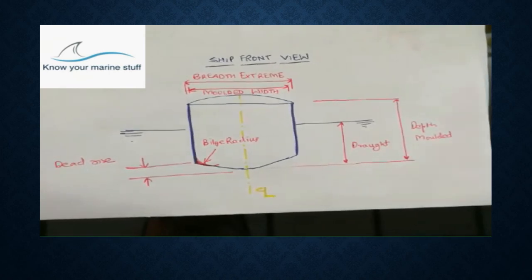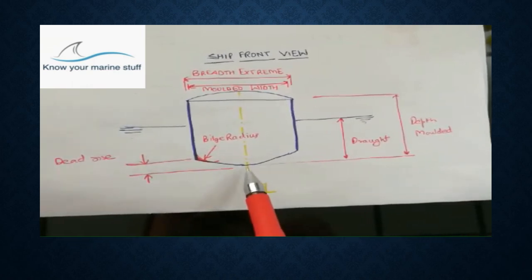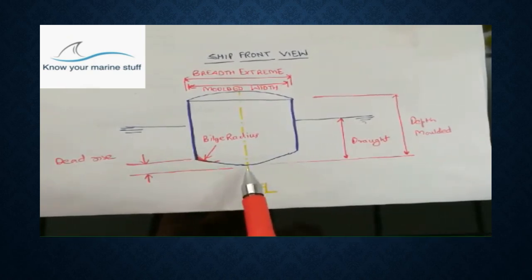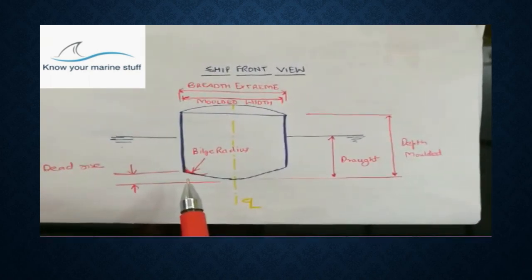Then comes the deadrise. Deadrise is the amount of angle that forms between the bottom of the ship's hull and the horizontal plane on either side of the center keel. Here is the center keel and this is the rise. It can be expressed in angles or in length.